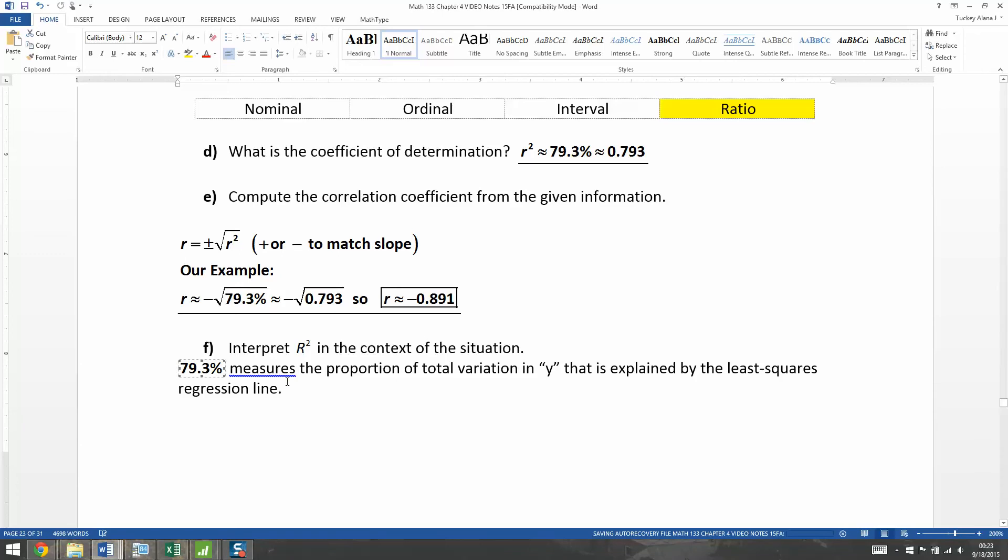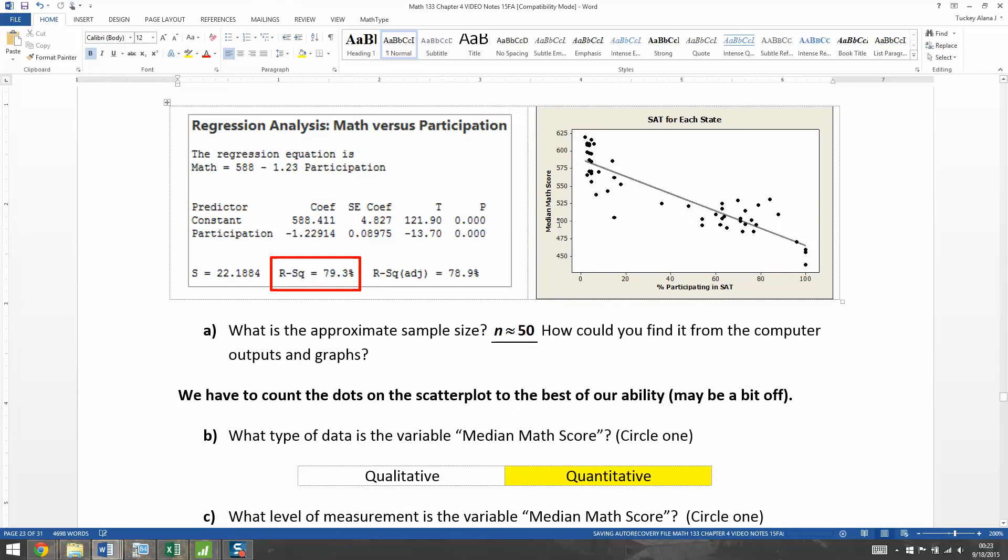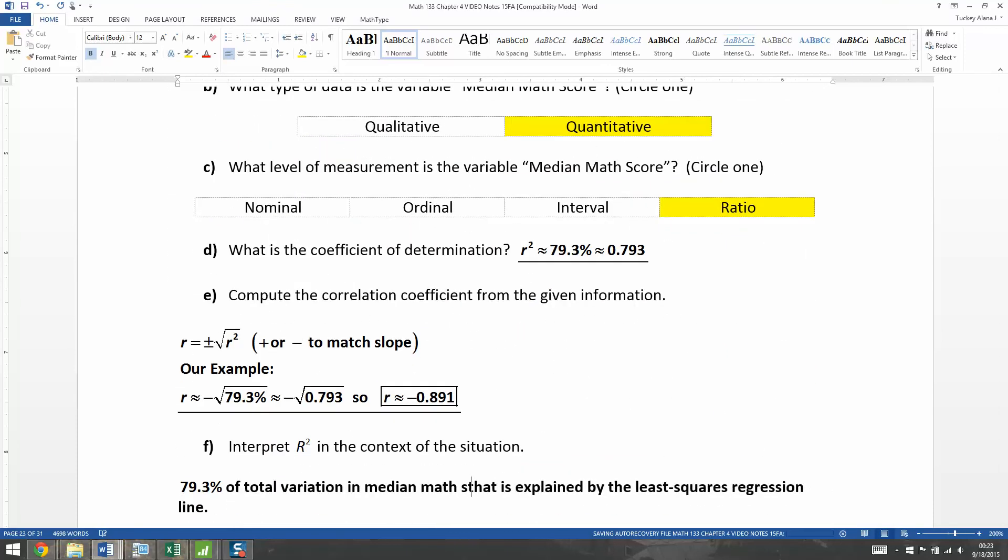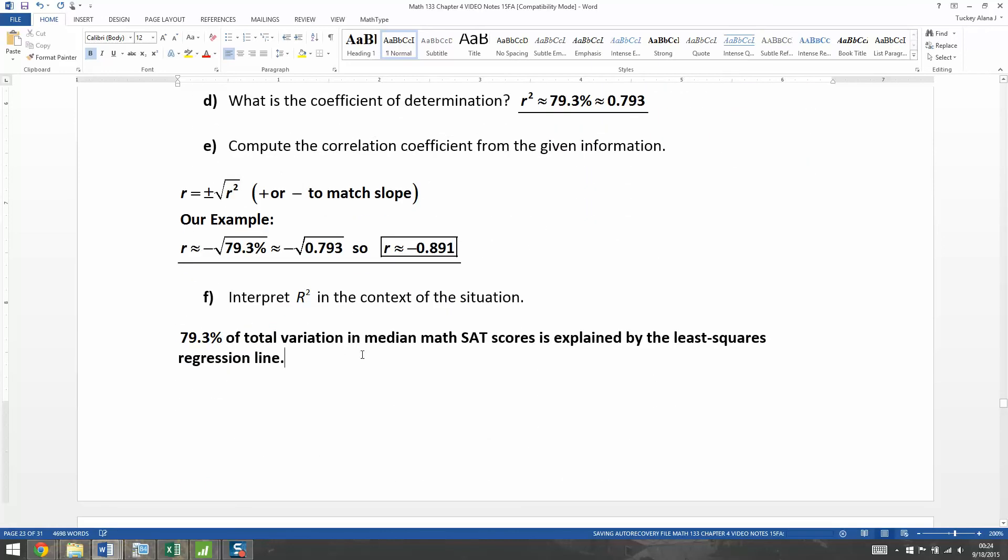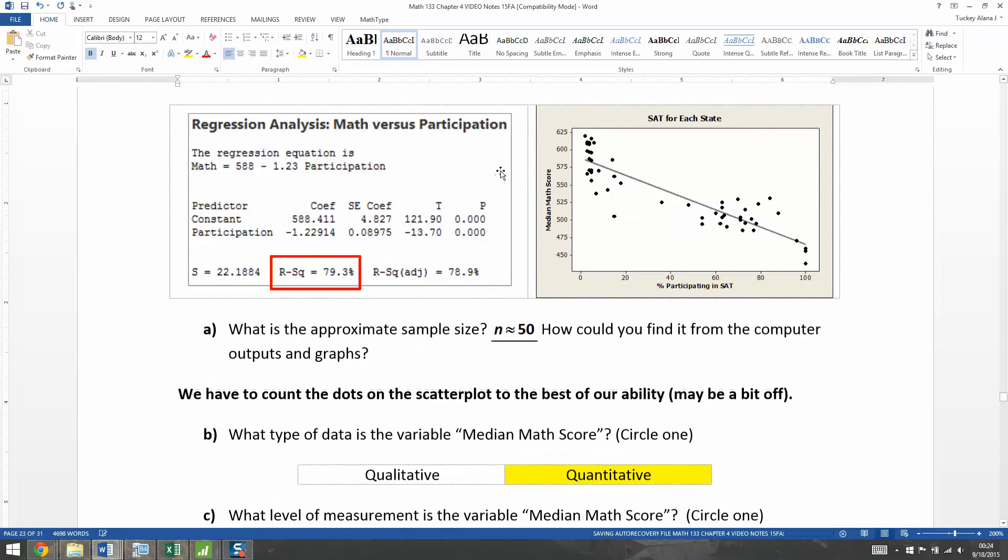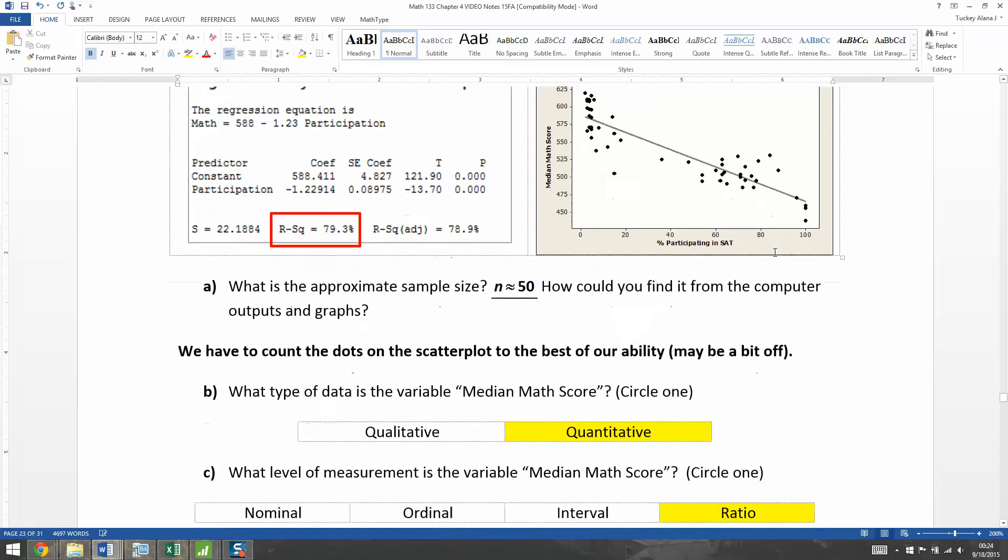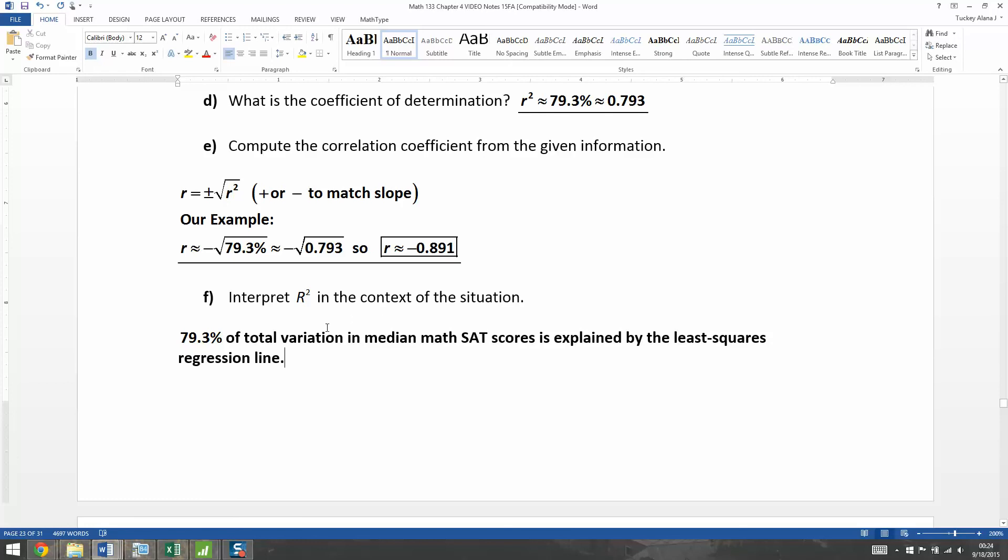Okay. So R-squared was 79.3 for us. So what we'll say is 79.3 percent, percent means the proportion, of the total variation in, and now we have to talk about Y. Y was our response variable, which is the median math SAT score, is explained by the least squares regression line. There you have it. So the variability that we're seeing in these math scores, 79.3 percent of it can be explained by this regression line, which by the same token means about 20 percent of it we're not sure why it's happening. We can't accommodate for it with our model.